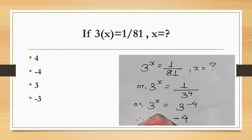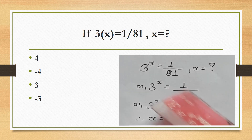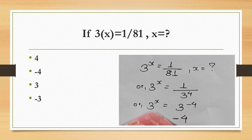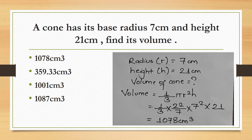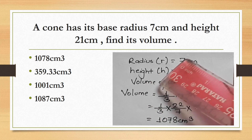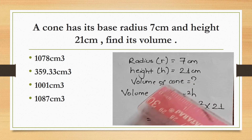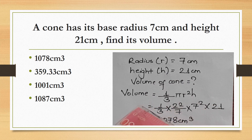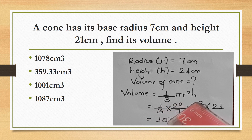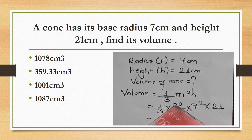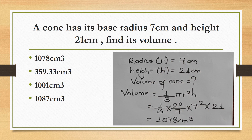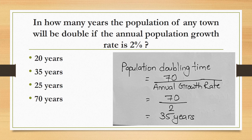A cone has base radius 7 cm and height 21 cm. Find its volume. Volume of cone = (1/3)πr²h = (1/3) × (22/7) × 7² × 21 = (1/3) × (22/7) × 49 × 21. Solving this gives 1078 cm³.